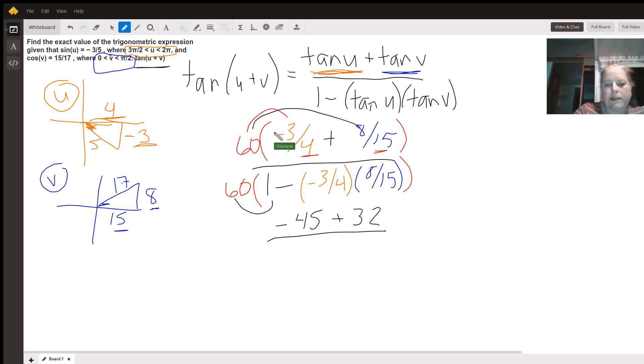Here 60 times 1 is 60. And before we do this last one, it might help to do this multiplication off to the side. Negative 3 times 8 is negative 24.